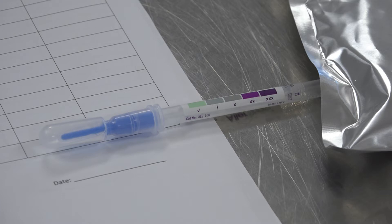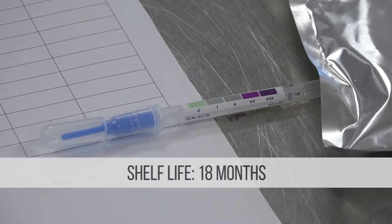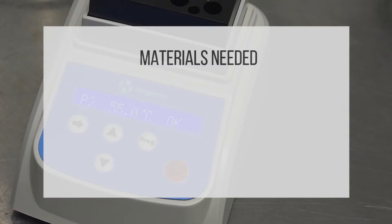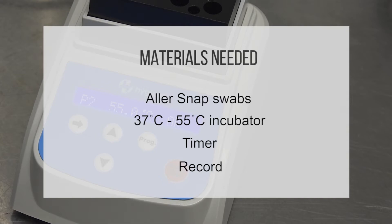Swabs have a shelf life of 18 months when stored at room temperature or refrigerated. The materials you will require are Allersnap swabs, 37 degree to 55 degree Celsius incubator, a timer and your monitoring record.